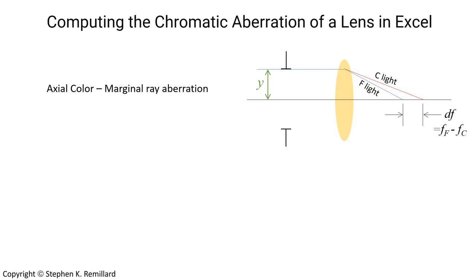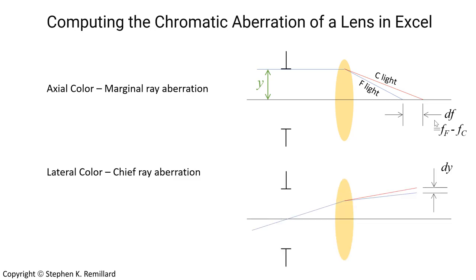Chromatic aberration is entirely a consequence of dispersion in the glass. There's also lateral color, which is an aberration of the chief ray. The chief ray also refracts at the glass, and different wavelengths of light will refract different amounts. The measure of lateral aberration is the difference in height at the image for different wavelengths. Lateral color is a consequence of there being a stop in front of the lens, because if you move the aperture stop to the lens, the chief ray passes through the center and there is no diffraction.